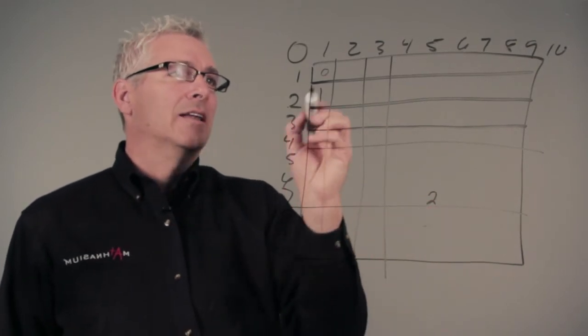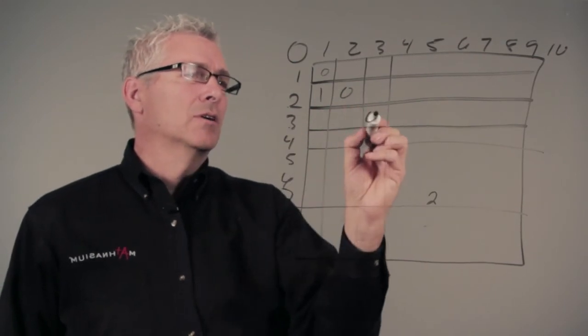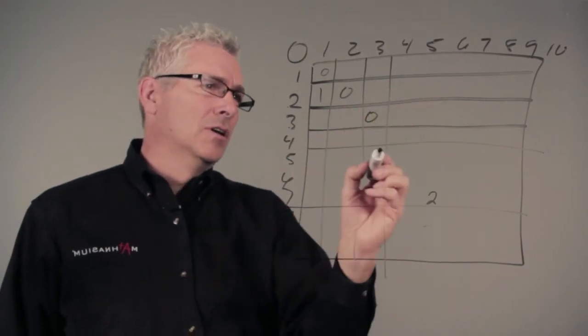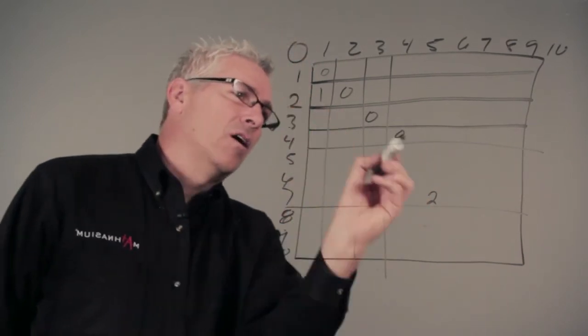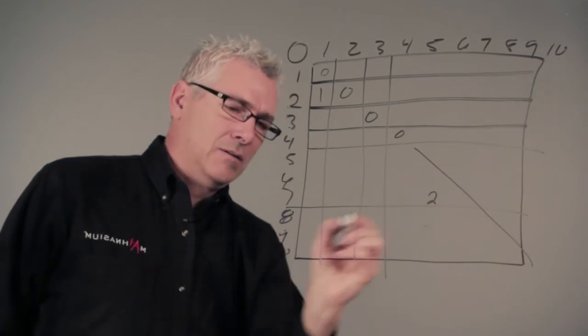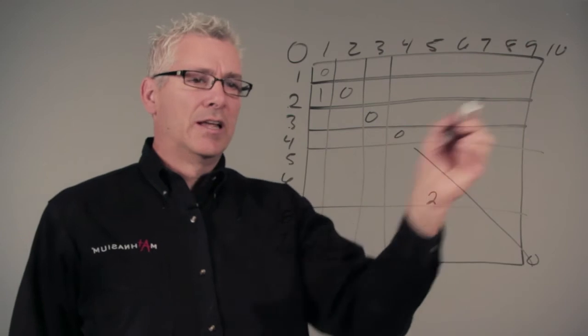You'll notice that if you do 2 minus 2 you get 0. If you do 3 minus 3 you get 0. If you do 4 minus 4 you get 0. So we're going to have zeros on the diagonal all the way down to here, to 10 minus 10 is 0 again, and simply fill in as you go.